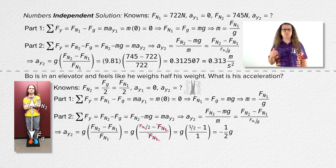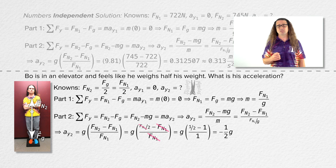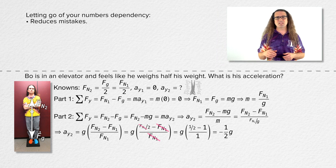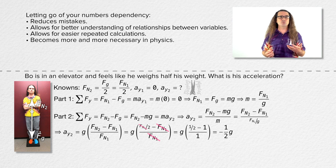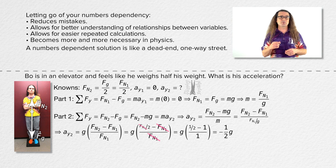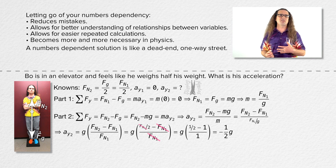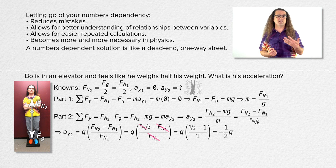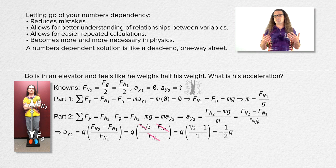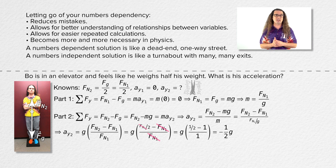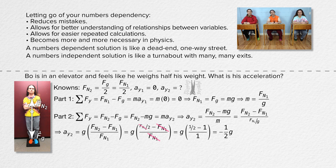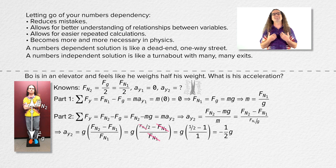As you get further into your physics learning, problems are going to have fewer and fewer numbers in them. In summary, letting go of your numbers dependency reduces mistakes, allows you to better understand relationships between variables, allows for easier repeated calculations like we do in labs, and the future of your physics learning includes fewer numbers. A numbers-dependent solution is like a dead-end one-way street — to solve again with different numbers you need to go back to the beginning. However, a solution that is primarily variables is like a turnabout with many exits, and each exit is a path to extend your physics learning. Thank you very much for learning with me today.